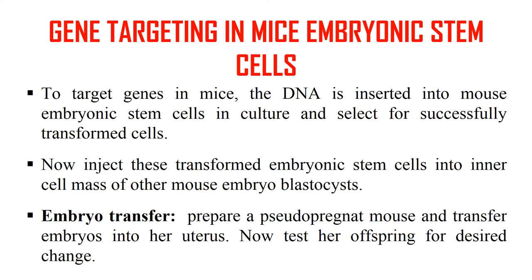To perform gene targeting in mice using embryonic stem cells, DNA is first inserted into mouse embryonic stem cells in culture, and the successfully transformed cells are selected out. These transformed cells are then injected into the inner cell mass of another mouse embryo blastocyst. This embryo, now containing the transformed embryonic stem cells, is transferred to the uterus of a surrogate mother, which gives birth to transgenic mice with specifically targeted genes.